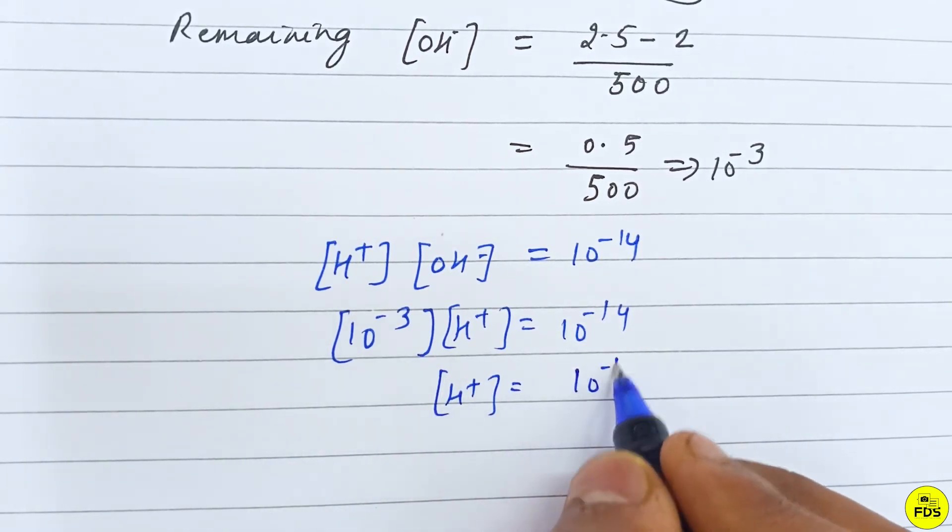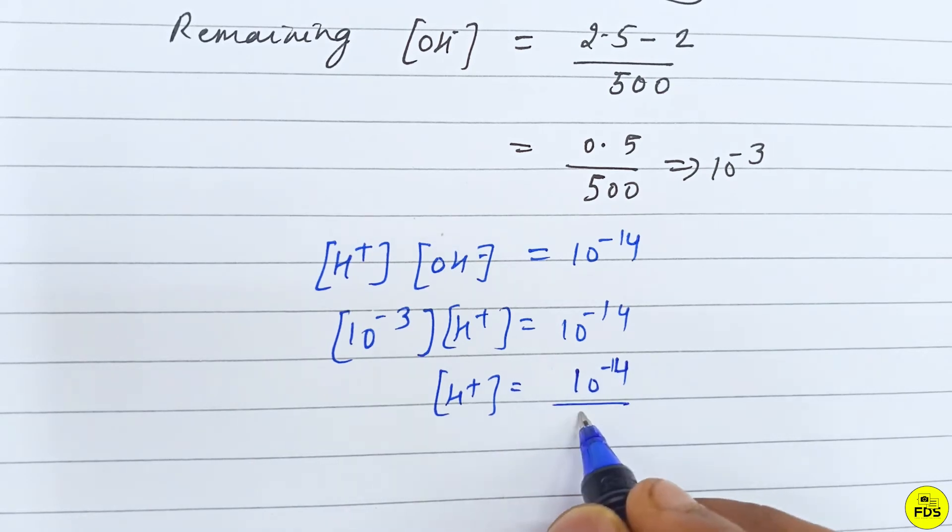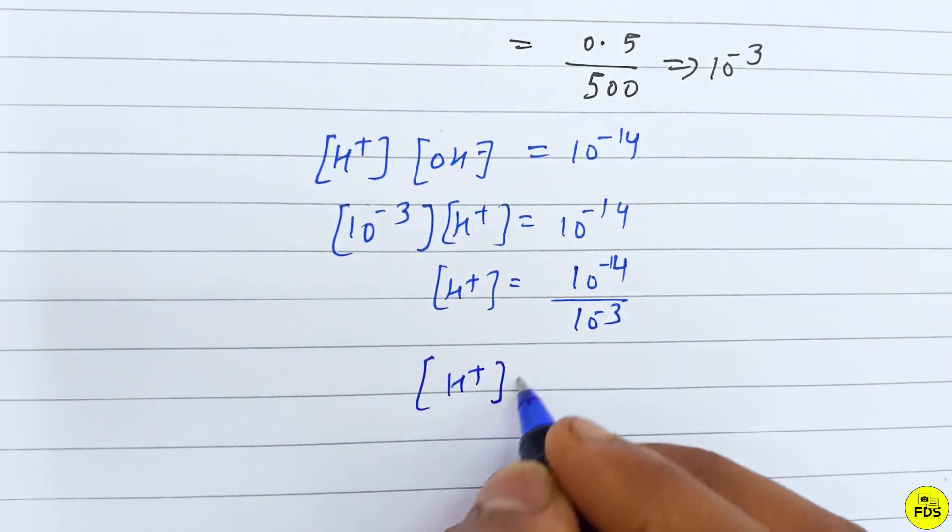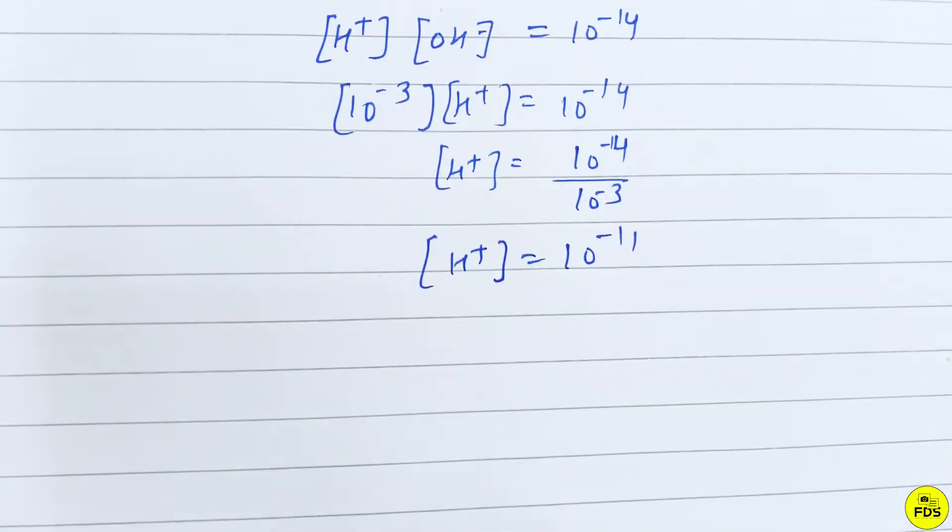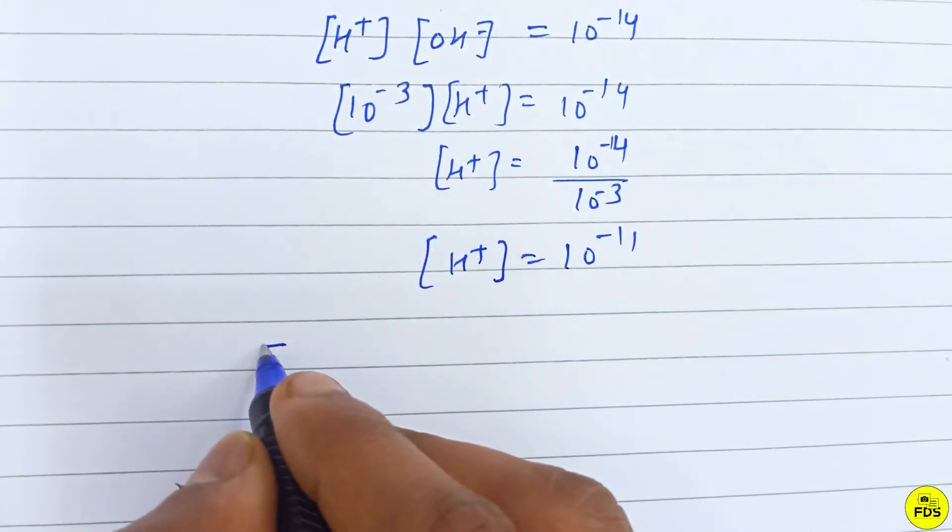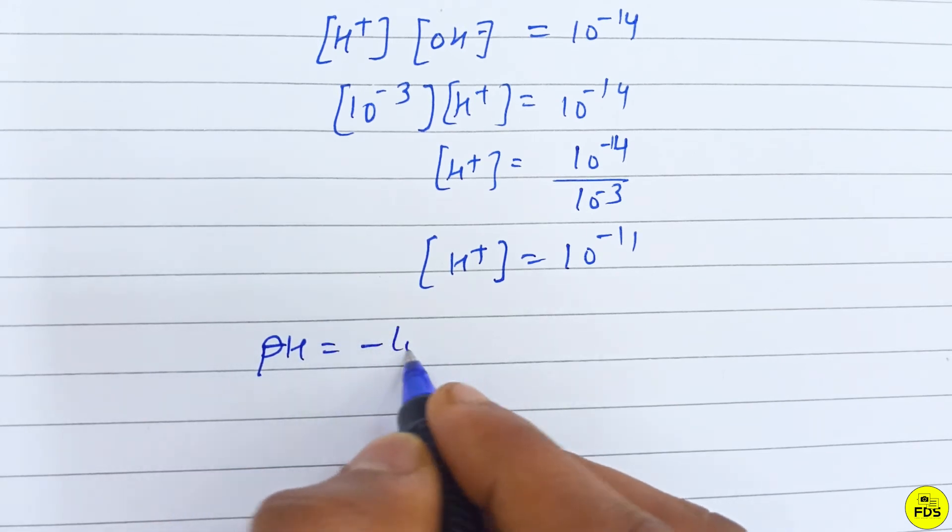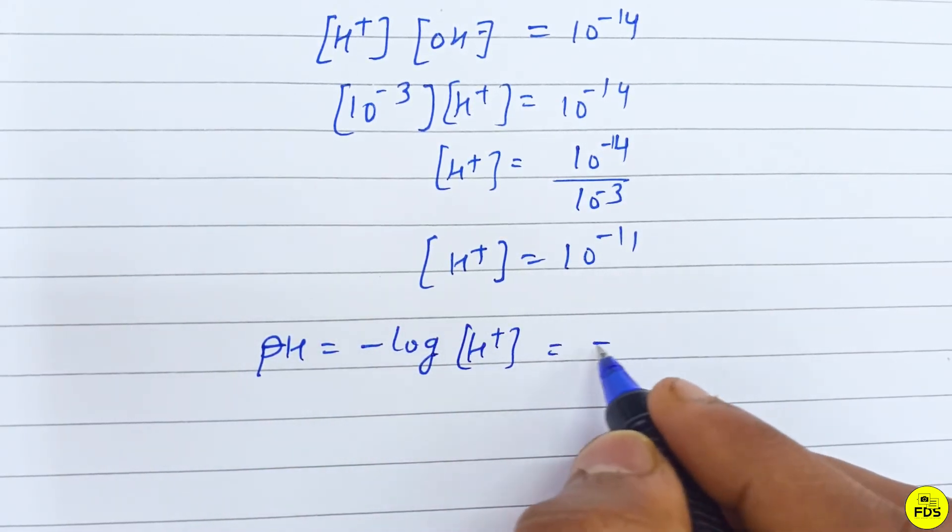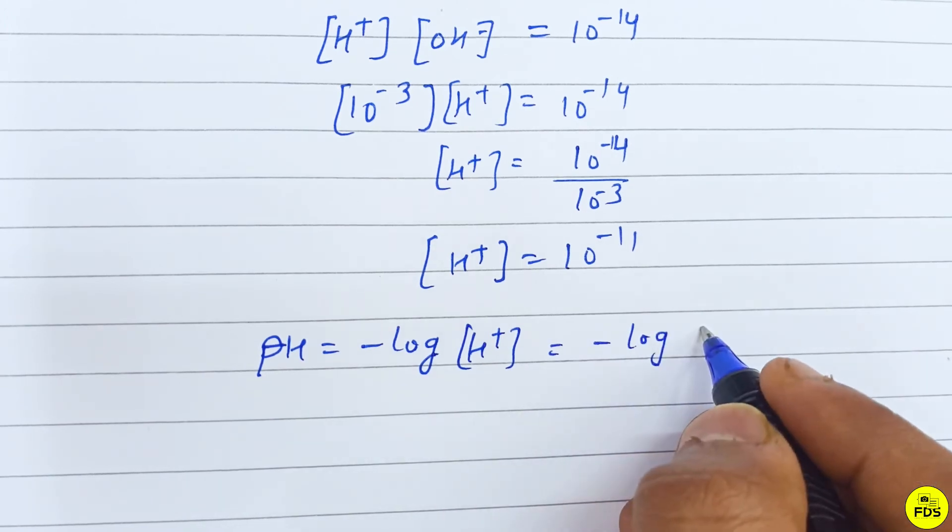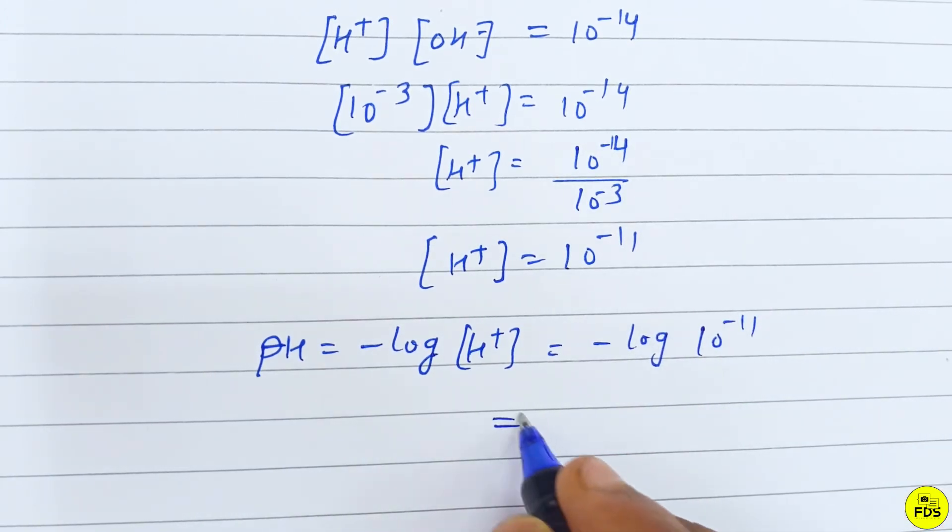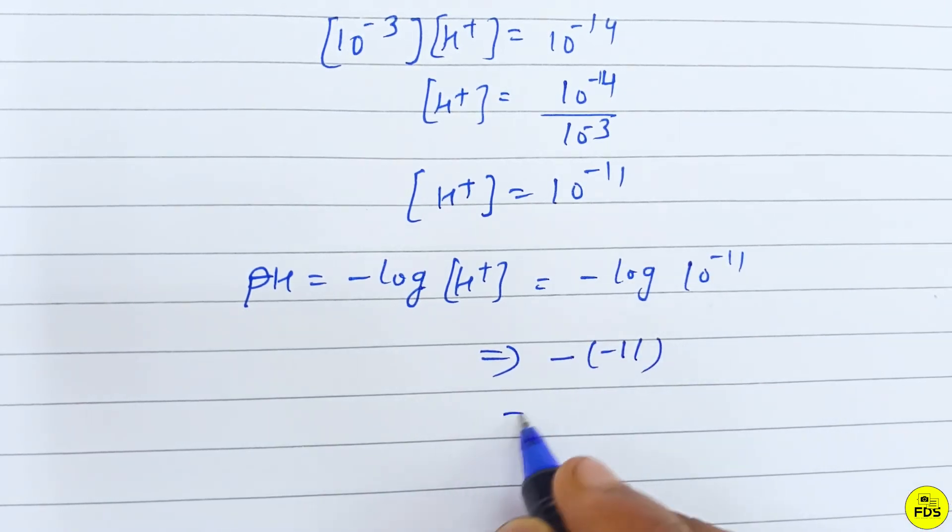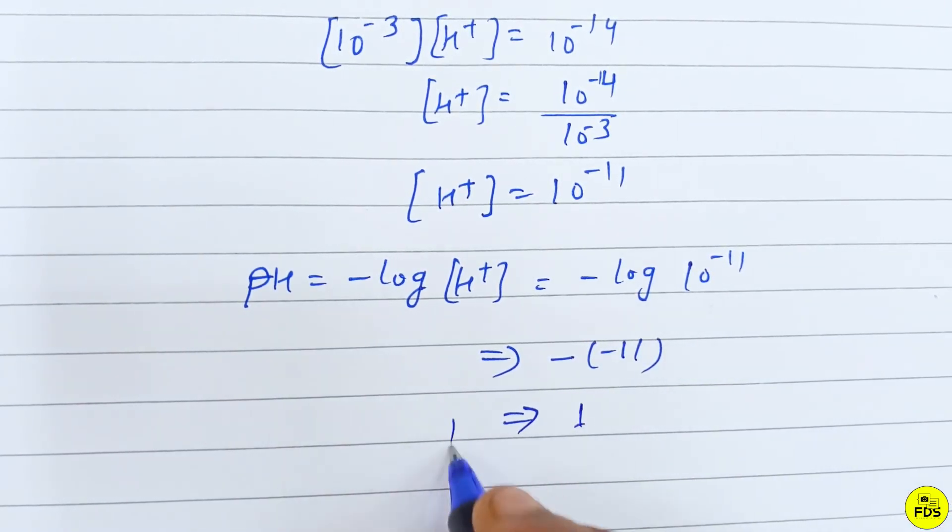10 to the power minus 3. So [H⁺] equals 10 to the power minus 11. pH equals negative log [H⁺] equals negative log 10 to the power minus 11, which equals 11.